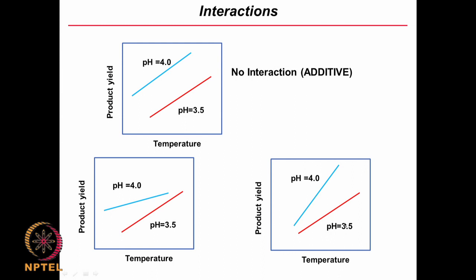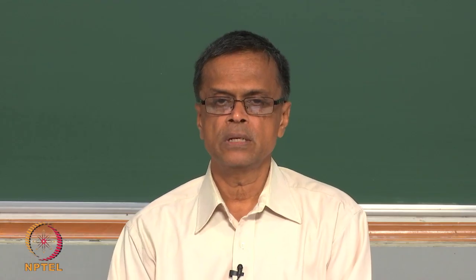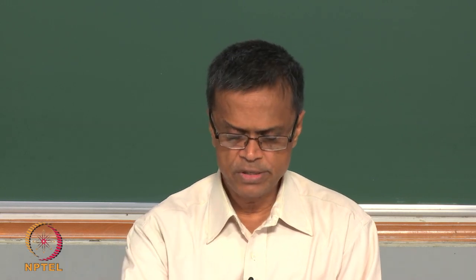For example, some drugs perform very differently in Europeans compared to Africans or Asians — then you can say the drug and race are interacting. So if you want to study interactions, we definitely need to perform factorial-type experiments; that is very, very important.